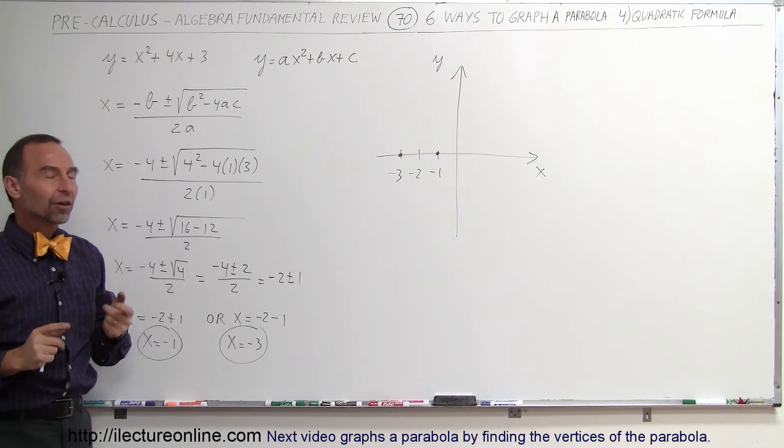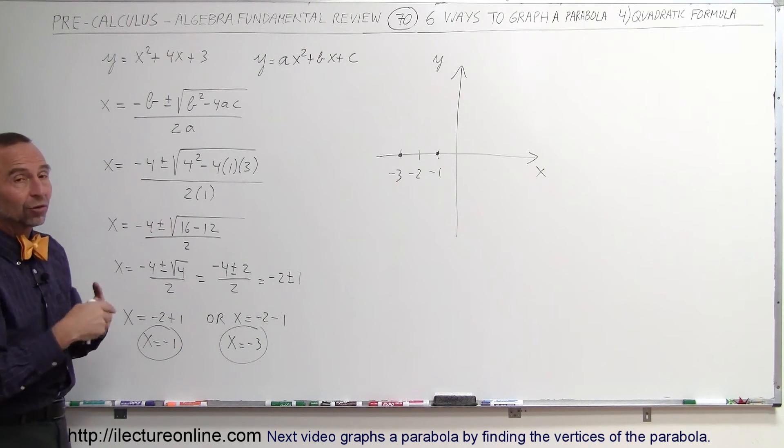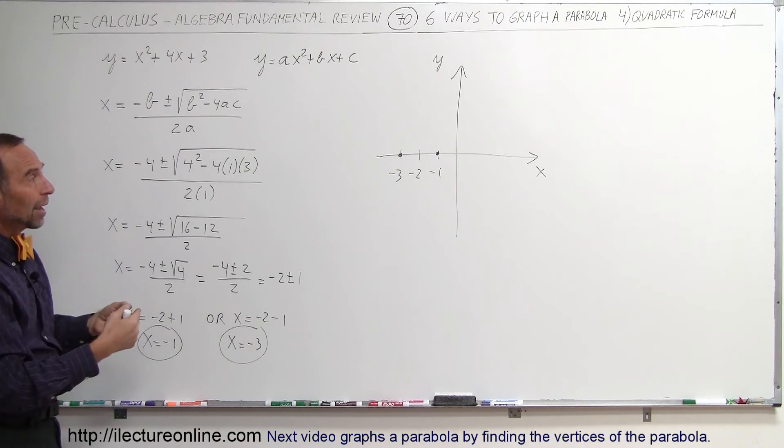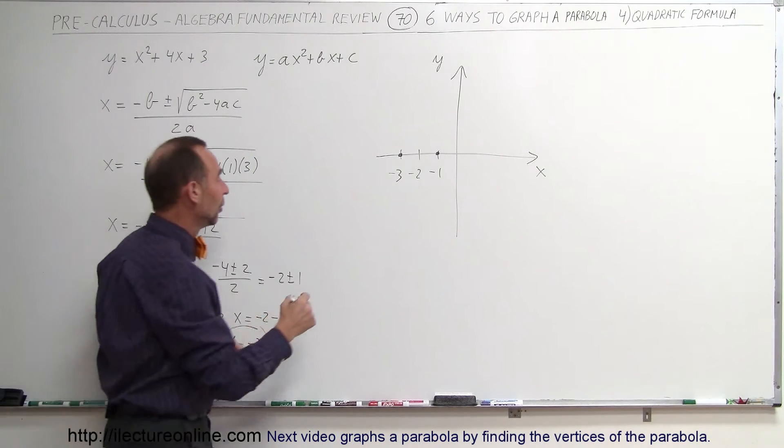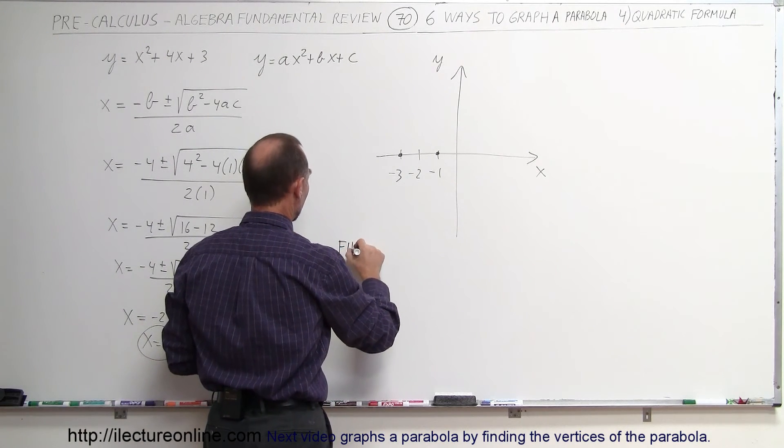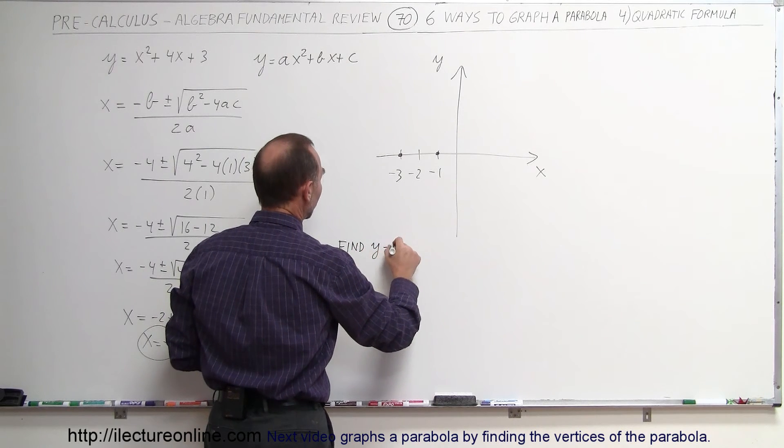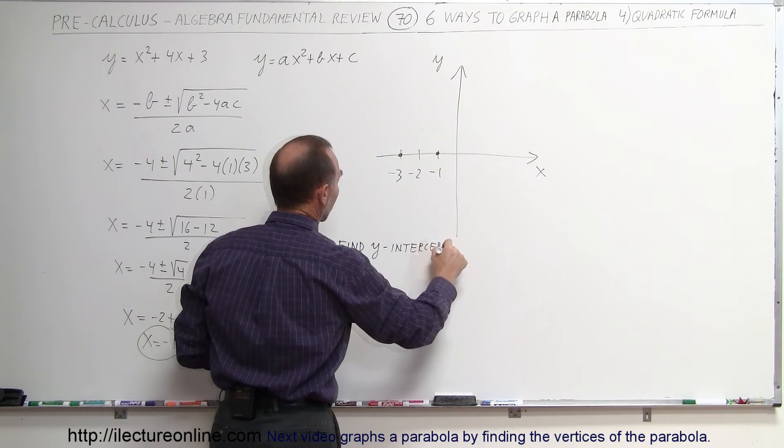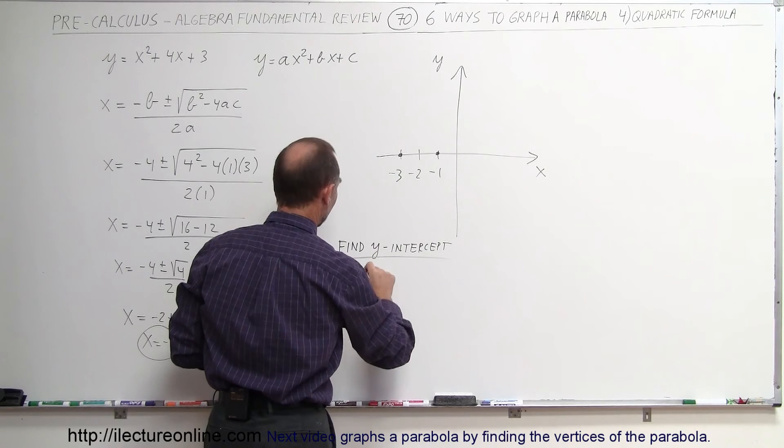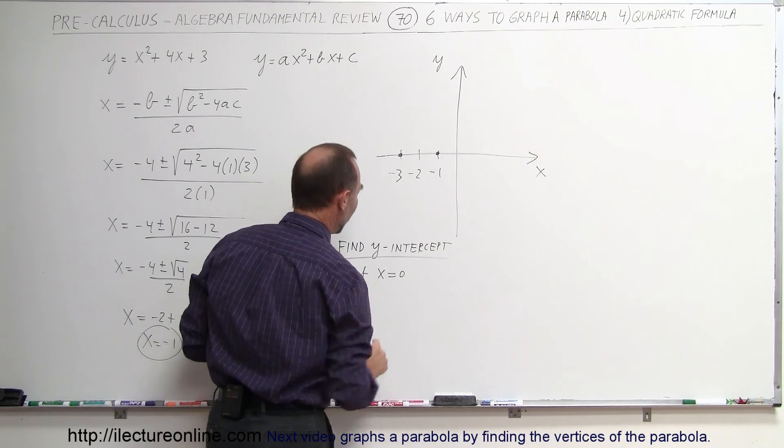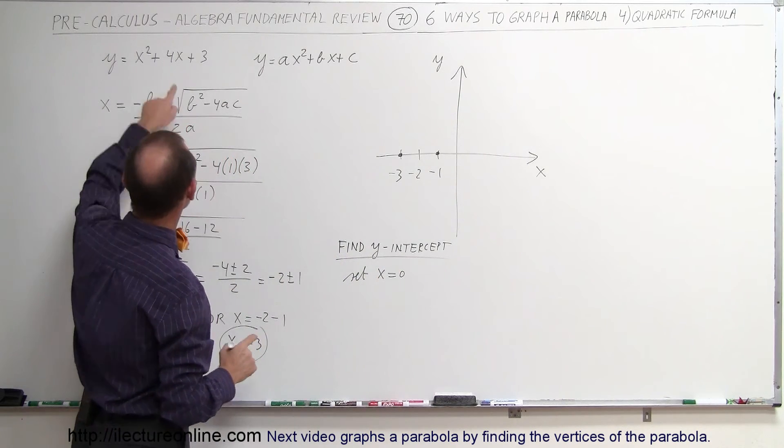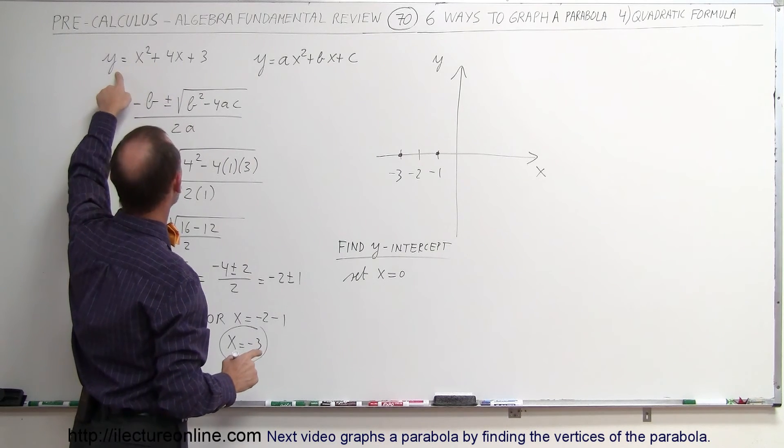We can also help ourselves by also finding the place where it crosses the y-axis. Where it crosses the y-axis, that's where x is equal to 0. So to find the y-intercept, we're going to set x equal to 0. When we set x equal to 0, we get the y-intercept.